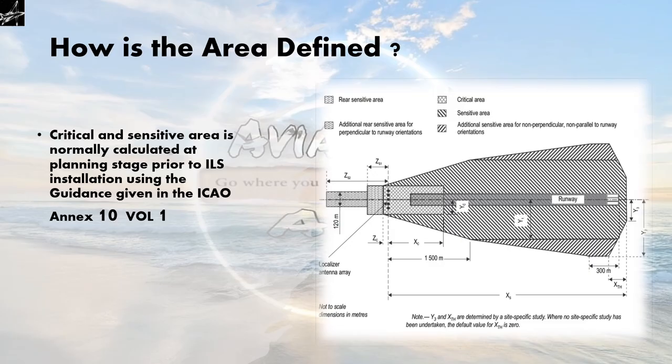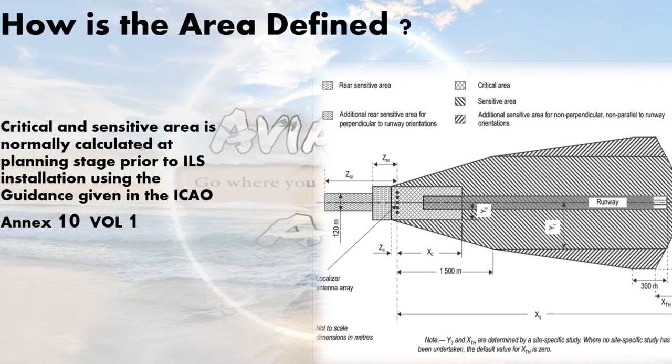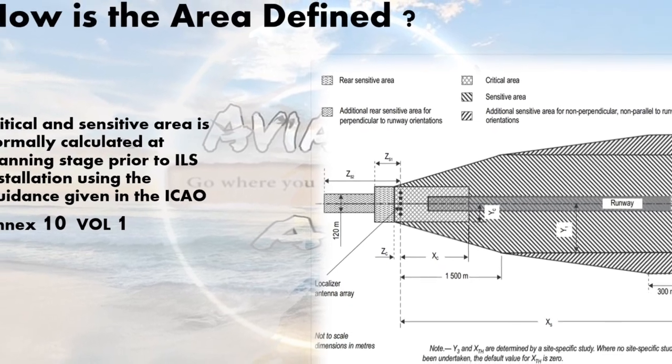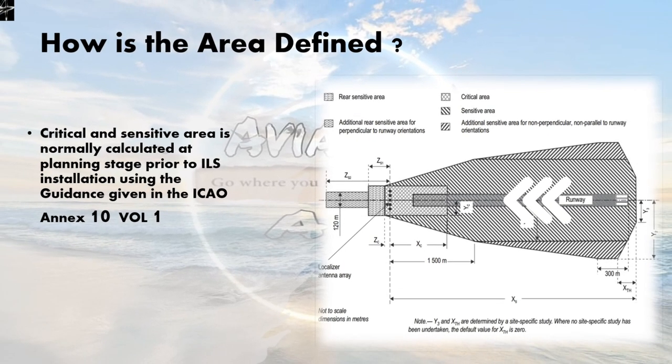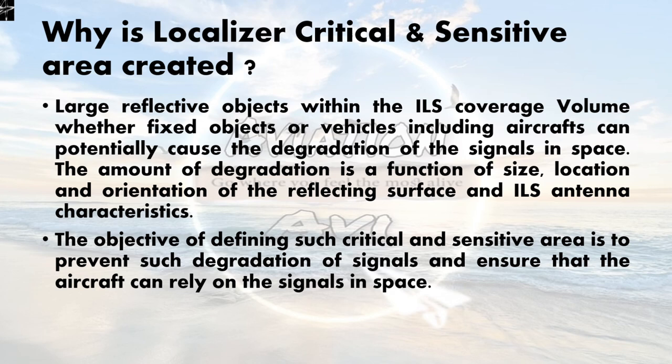In this diagram we can see the area surrounding the localizer. This is the localizer, and about the runway we have different shaded areas which represent the critical and the sensitive area. This area is normally calculated at the planning stage prior to ILS installation using guidance given in ICAO Annex Volume 1.